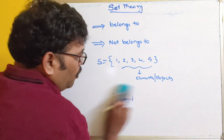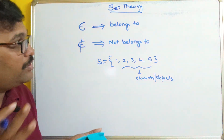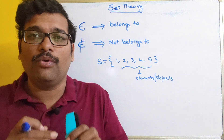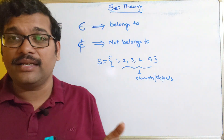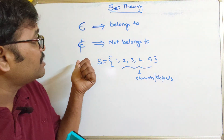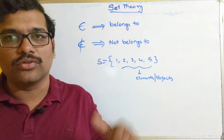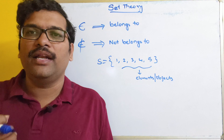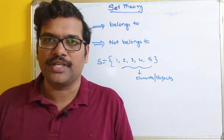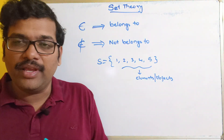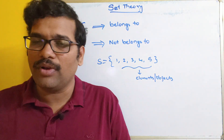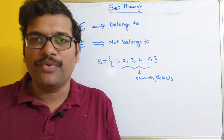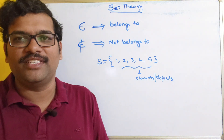I hope you understood this. In this session we covered the complete introduction to set theory — what a set is, how it can be represented in roster and set builder forms, what finite and infinite sets are, and the symbols belongs to and not belongs to. In the next session we'll go over different notations and types of sets. If you have any doubts, feel free to post in the comments. Please like, share, and subscribe. Thanks for watching!